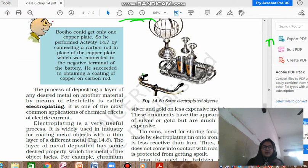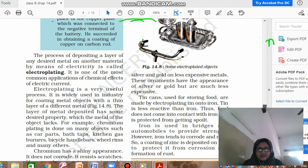The process of depositing a layer of any desired material by means of electricity - whichever metal you need, whichever metal you desire on any other material, you can do it by using the effect of electric current or by taking the help of electricity. Then that process will be known as electroplating. Now they have given you several examples.